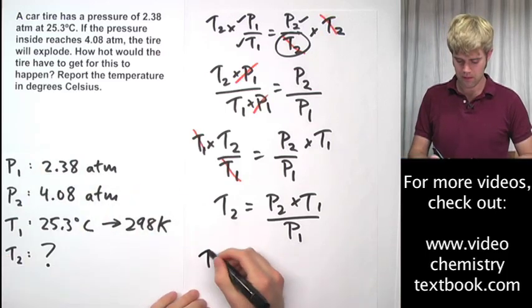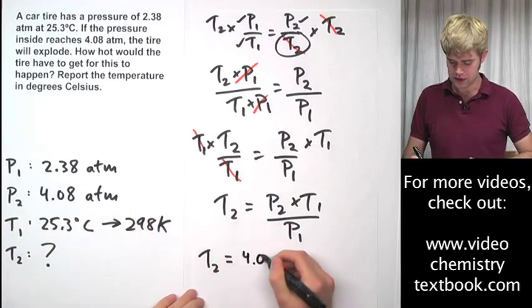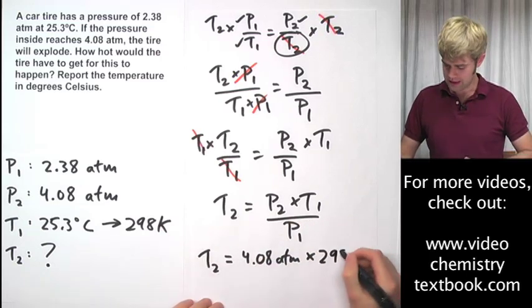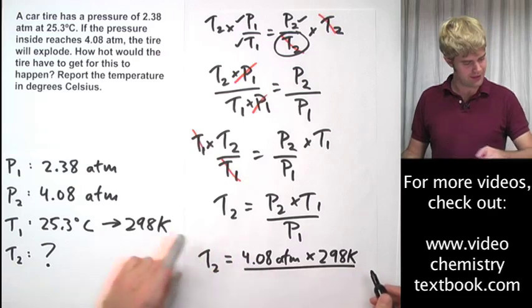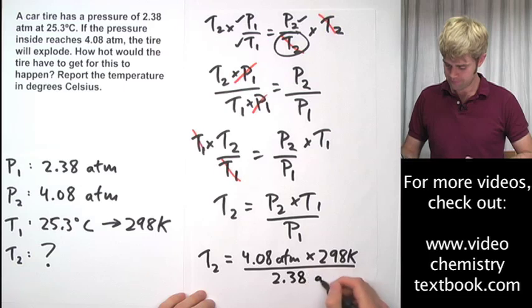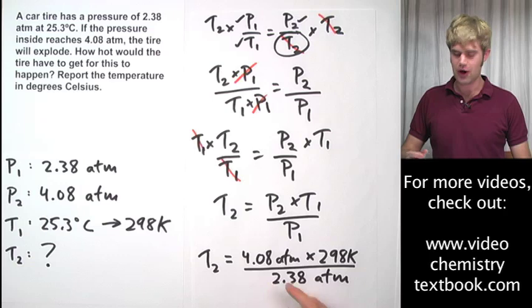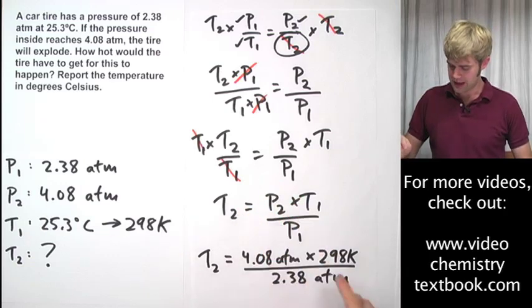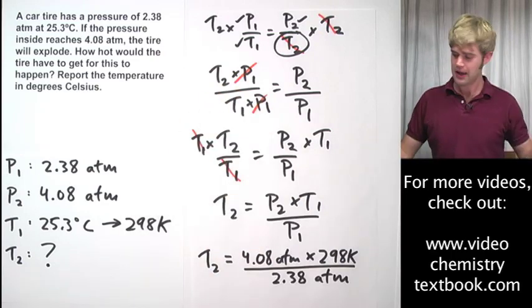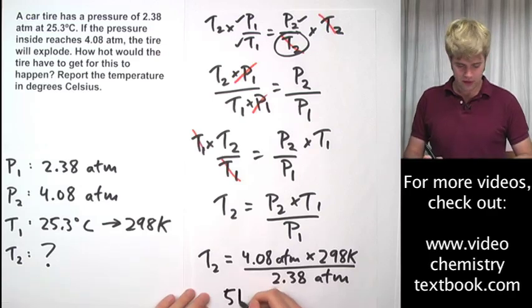So we'll do T2 equals P2, 4.08 ATM times T1, 298 Kelvin and divide that by P1, 2.38 ATM. Now notice that each of the numbers I'm putting in here have three significant digits. So when I put this into my calculator and do the math, the number that I get, the answer I get, I'm going to round that to three significant figures. And it turns out that after I put that in the calculator, I round it out, I get 511.